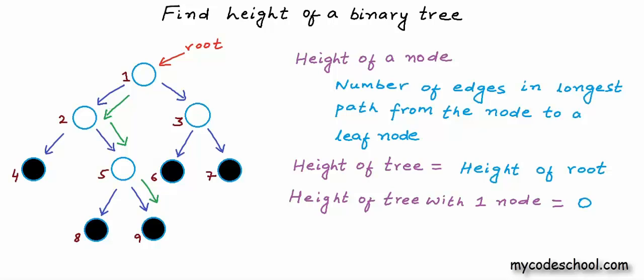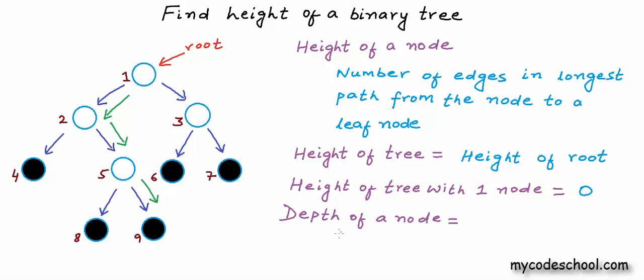We often also talk about depth and we often confuse between depth and height but these two are different properties. Depth of a node is defined as number of edges in path from root to that node. Basically depth is distance from root and height is distance from deepest accessible leaf node.